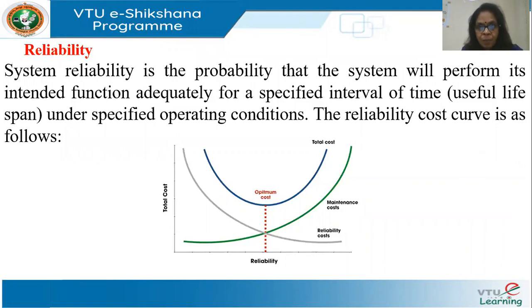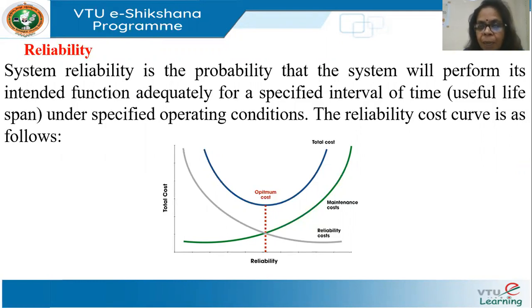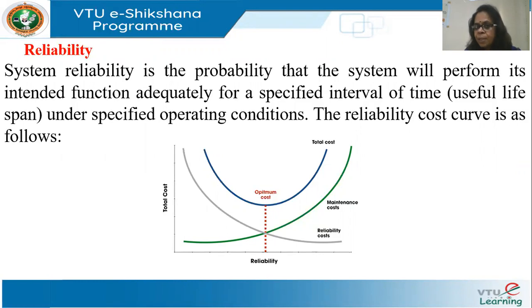When it comes to reliability, in the power system context it has two meanings. One is adequacy — that is, how adequate is it? Is my supply able to meet the demand? The second is security. To build this adequacy and security, we have to invest money because we have to build redundancy. If my demand is 10,000 megawatt and I have generation exactly 10,000 megawatt, then I'm not prepared — I don't have any reserve.